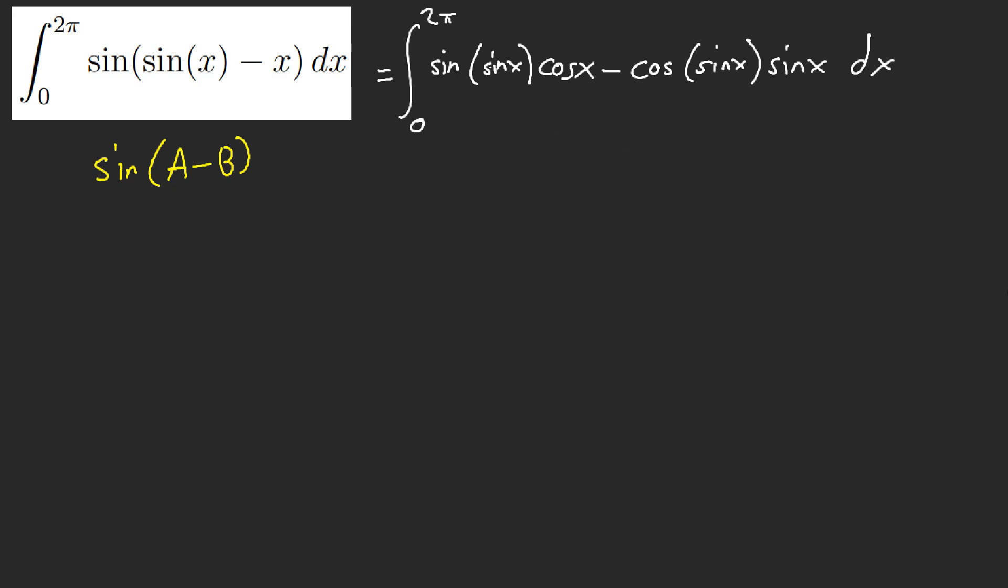Here, what do you notice? This is a u-substitution, right? So let u equal sine of x, in which you get 0, 0 here, for sine of u. And of course, this equals to 0. So now we're left with here.